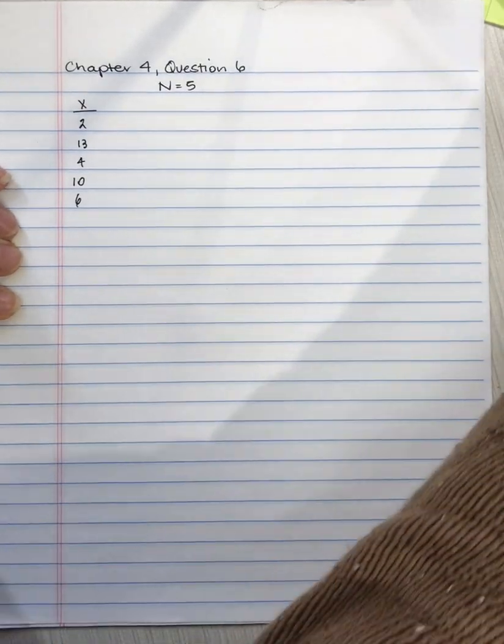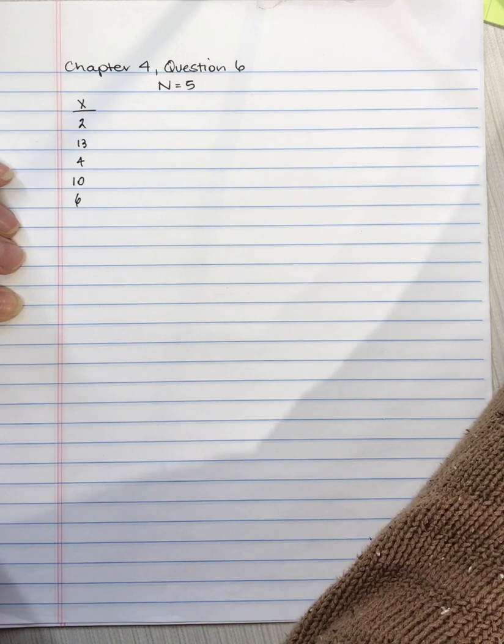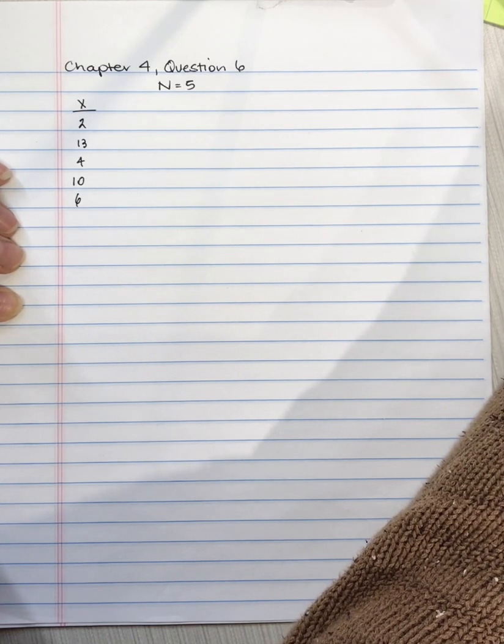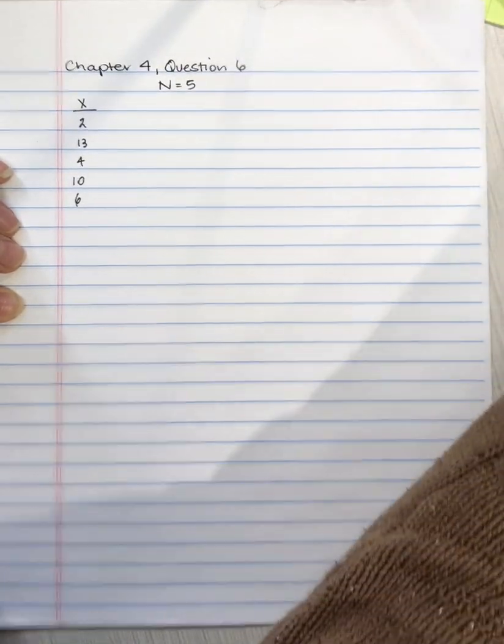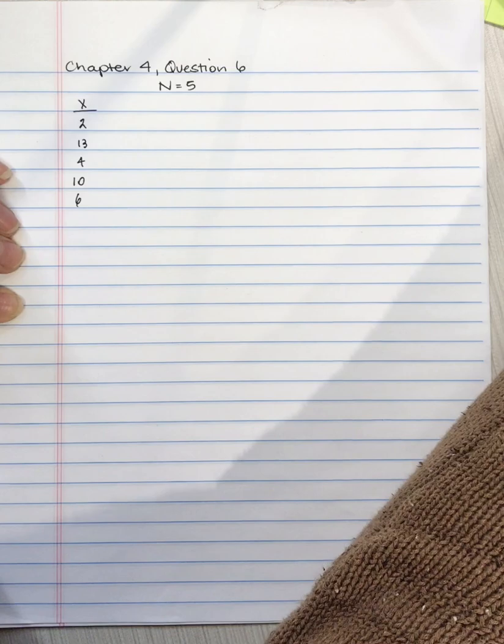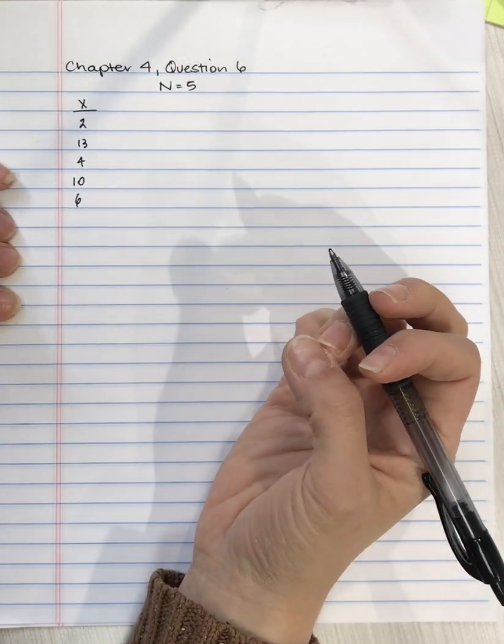Chapter 4, question 6 states: calculate the sum of squares, variance, and standard deviation for the following population of n equals 5 scores. The scores are 2, 13, 4, 10, and 6. Note, the definitional formula works well with these scores.